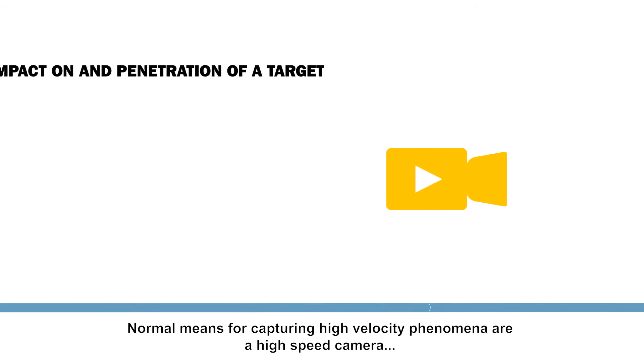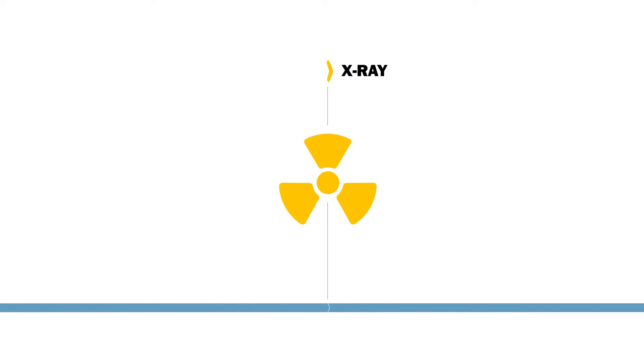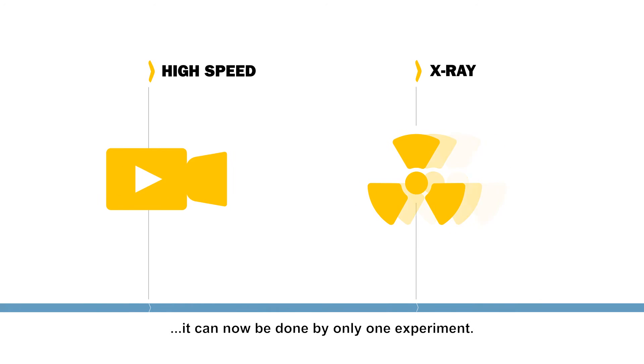Normal means for capturing high-velocity phenomena are a high-speed camera or flash x-ray. Whereas multiple flash x-ray recordings would have to be combined by doing several tests, it can now be done by only one experiment.